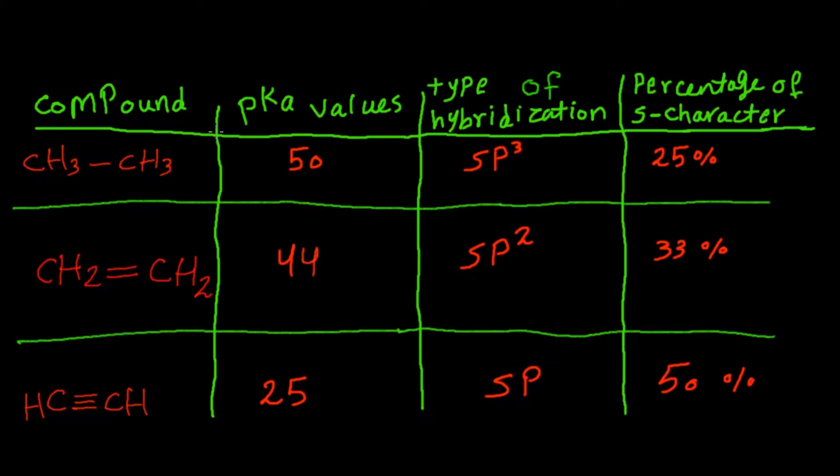In this video we are going to talk about the relation between the type of orbital hybridization and the acidity of organic compounds. Here we have a table which can illustrate this effect.